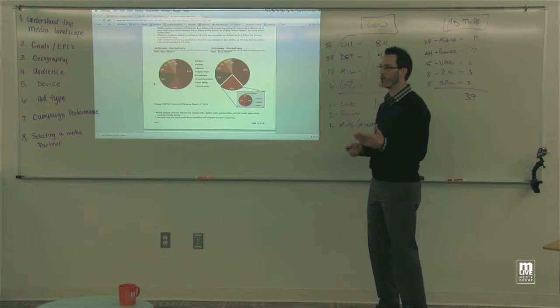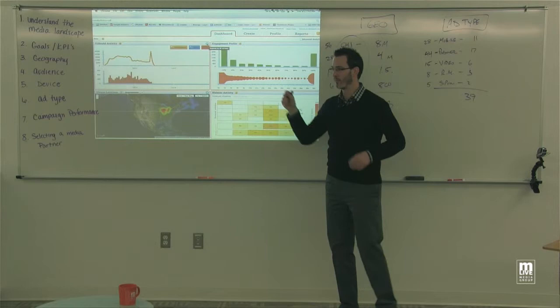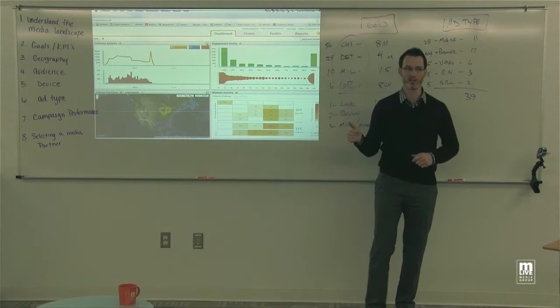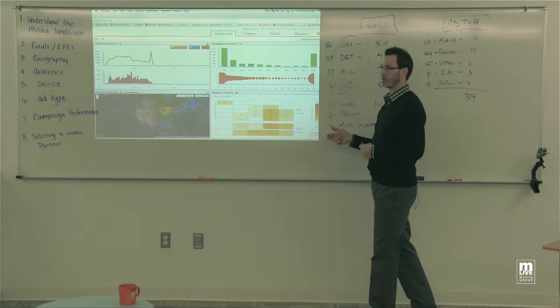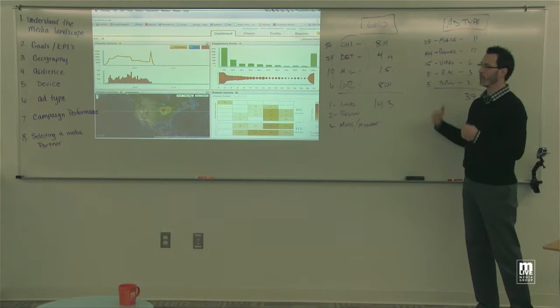Next is how to monitor campaign performance and know that this is working. You already know what you're trying to accomplish because you've established goals and KPIs. In analytics, the best thing you can do is connect your goals and KPIs, set goal completions in analytics, and set up events to track those things. You can connect those to your marketing campaigns through UTM codes and other things, and see what areas are working better than others.